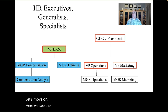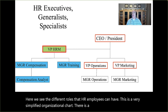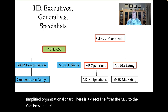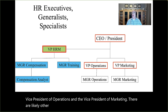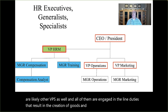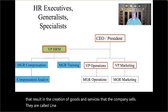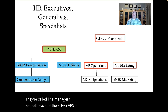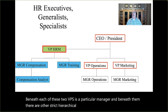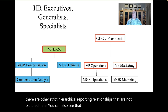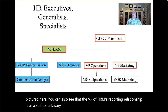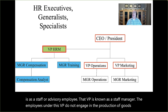Here we see the different roles that HR employees can have in a simplified organizational chart. There is a direct line from the CEO to the Vice President of Operations and the Vice President of Marketing — likely other VPs as well — and all of them are engaged in the line duties that result in the creation of goods and services that the company sells. They are called line managers. The VP of HRM's reporting relationship is as a staff or advisory employee, known as a staff manager. The employees under this VP do not engage in the production of goods or services.